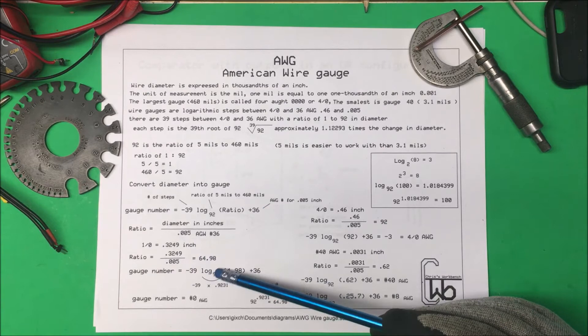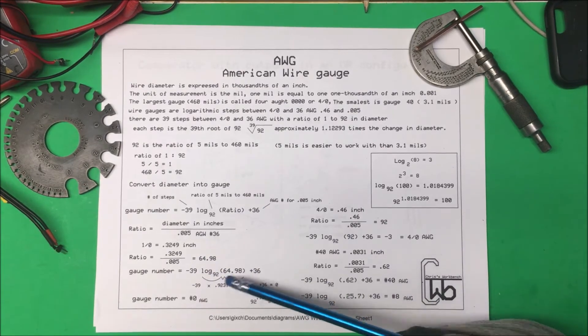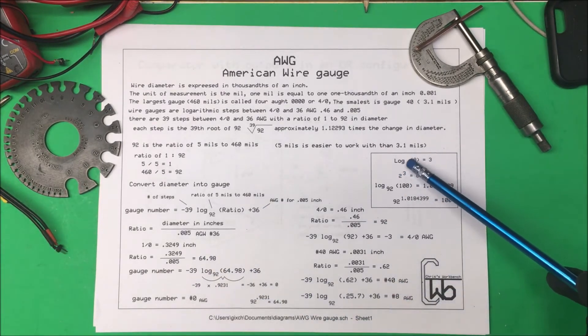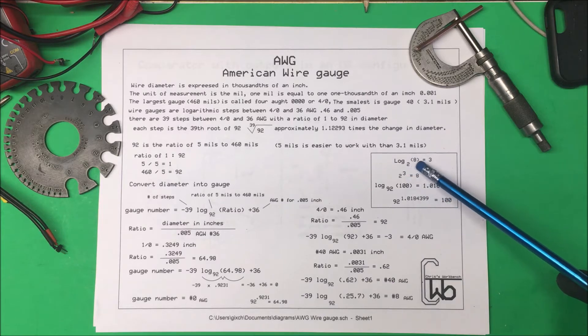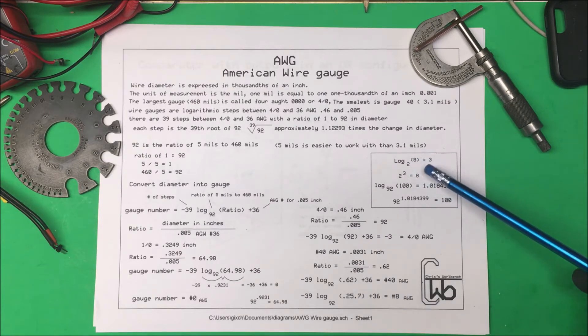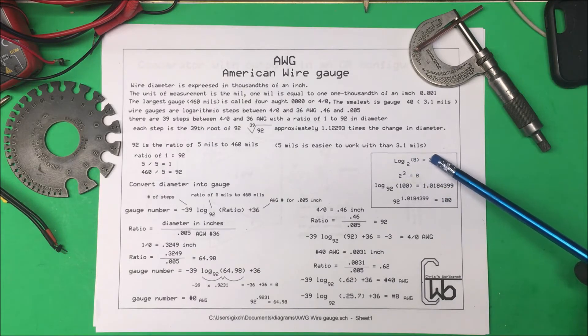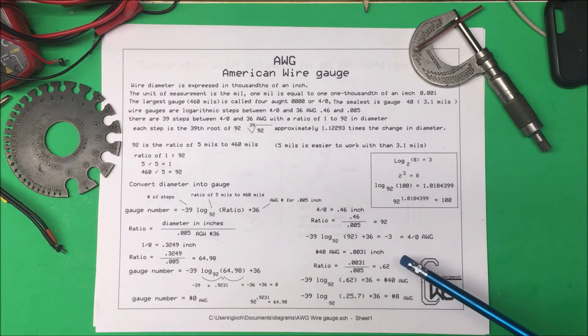The easiest way to remember log is that log base 2 of 8 equals 3. What power do you have to raise 2 to to get to 8? 2 to the third power equals 8. 2 times 2 times 2 equals 8. So we raise it to the third power, that's our 3.